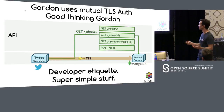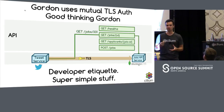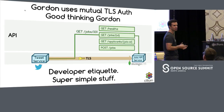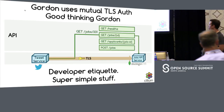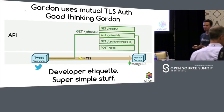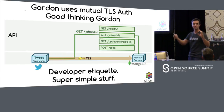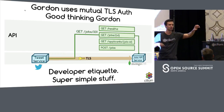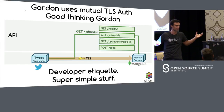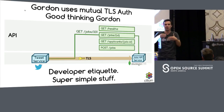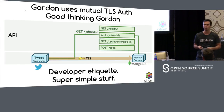Gordon is a good citizen and uses mutual TLS auth. Good thinking, Gordon. But does TLS buy us anything? TLS basically says anything from this container to this app is encrypted, but it doesn't actually do anything at the API call level. We can still do all of the API calls that we want.